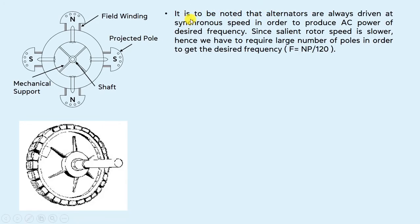It is to be noted that alternators are always driven at synchronous speed in order to produce AC power of the desired frequency. So, alternators always run at a synchronous speed and have a fixed frequency. Since the salient rotor speed is lower, we require a large number of poles in order to get the desired frequency, according to the formula: F = NP / 120.